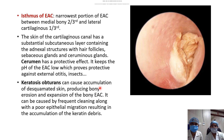The isthmus of the external auditory canal is the narrowest portion, lying between the medial bony two-thirds and lateral cartilaginous one-third. The skin of the cartilaginous canal has a substantial subcutaneous layer containing hair follicles, sebaceous glands, and ceruminous glands. Cerumen has a protective effect, keeping the pH of the canal low, which protects against external otitis and insects. Normally, wax moves from medial to lateral — away from the tympanic membrane. Keratosis obturans occurs when accumulation of desquamated skin produces bony erosion and expansion of the bony external auditory canal, caused by frequent cleaning with poor epithelial migration.